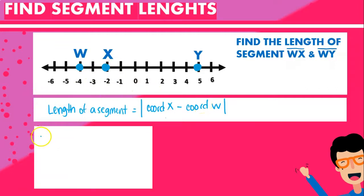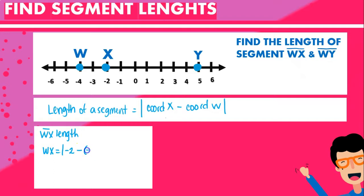So for example, if we want to know what the length of WX is going to be, we take the absolute value of X, which is minus 2, minus the coordinate of W, which is minus 4. That gives us the absolute value of minus 2 plus 4, and minus times minus is positive, so that becomes the absolute value of 2, which is 2.